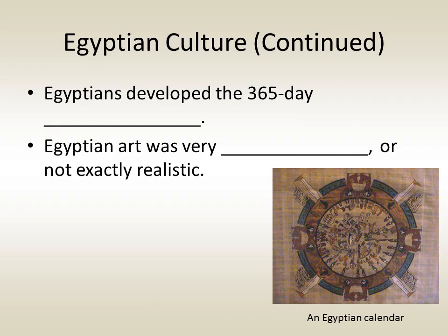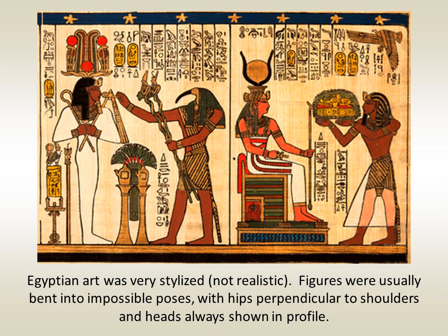Ancient Egyptians also created the 365-day calendar. Their art was very stylized and not exactly realistic — Egyptian figures are usually bent into impossible poses, with hips and shoulders at different angles and the head always shown in profile.